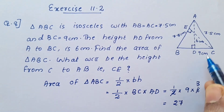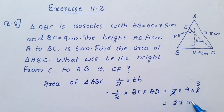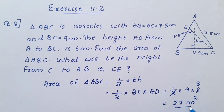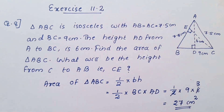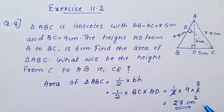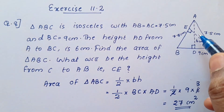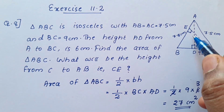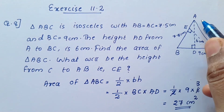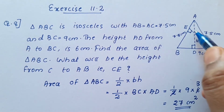The area of triangle ABC is 27 centimeter square.